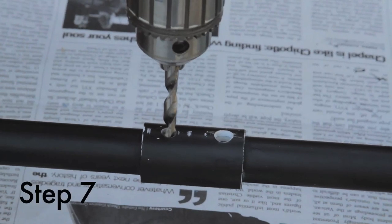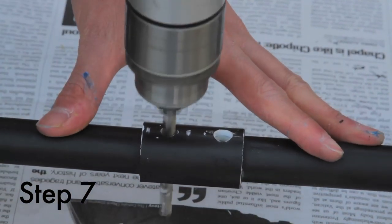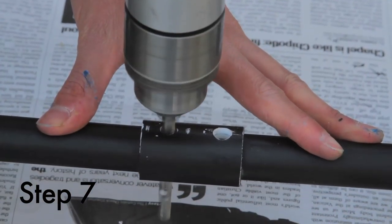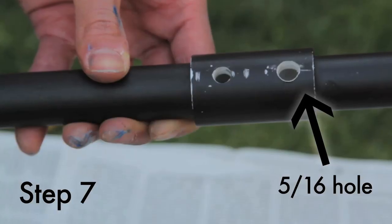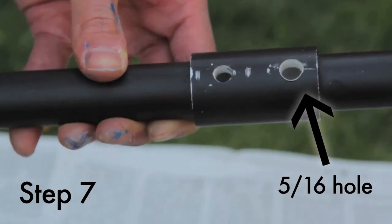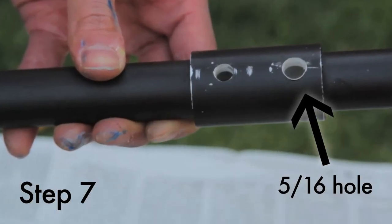Then drill a 1-4-inch hole into your coupling. This is for mounting your camera directly to the dolly. You can also drill a 5-16th hole in case you want to connect a tripod head to your dolly instead.